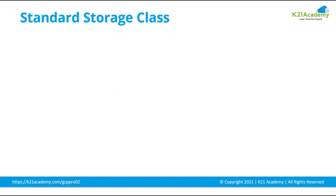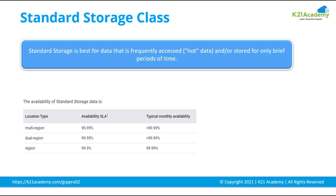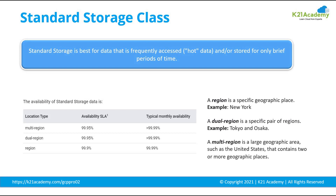Let's talk about standard storage classes. When used in a region, standard storage class is appropriate for storing data in the same location as co-locating your resources, maximizes the performance for data intensive computations, and can reduce the network charges. When used in a dual region, you get optimized performance when accessing Google Cloud products located in one of the associated regions. When used in a multi-region, standard storage is appropriate for storing data which is accessed around the world such as serving website content, streaming videos, and executing interactive workloads.